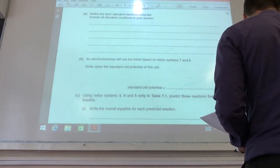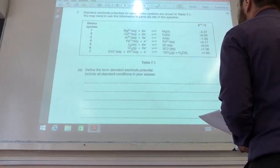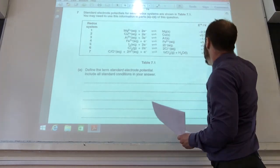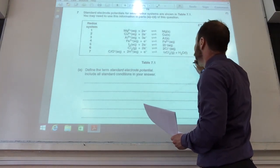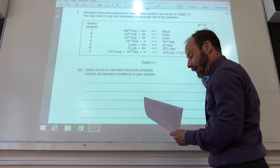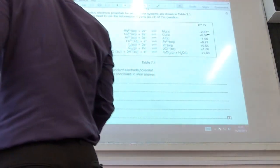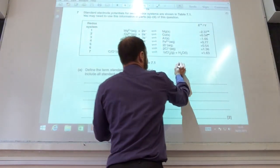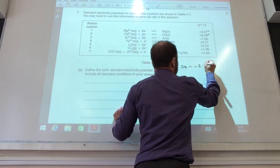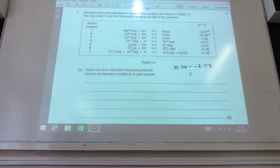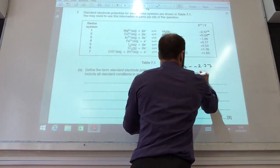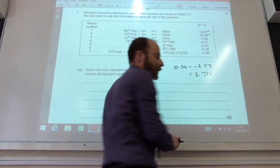Electrode potentials are based on 1 and 2. Write down the cell potential for 1 and 2. It's going to be the difference between those two, so it's going to be 0.34 minus minus 2.37, which will give you 2.71 volts, like so.